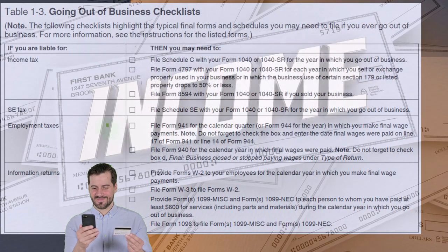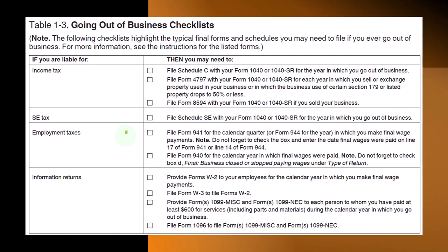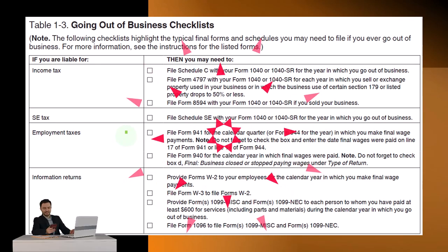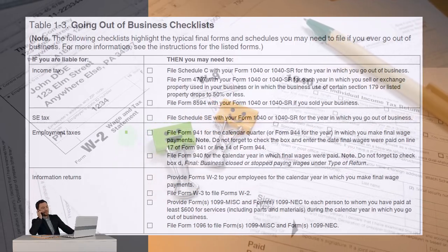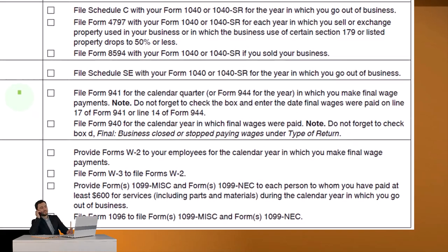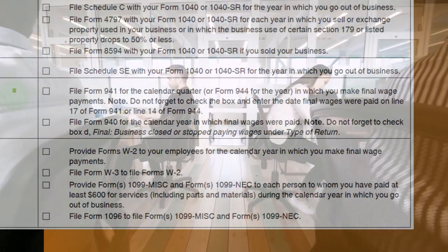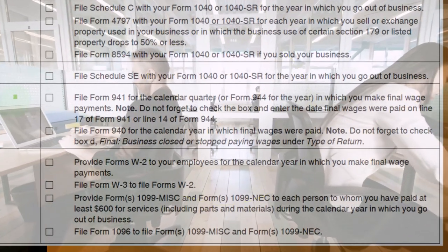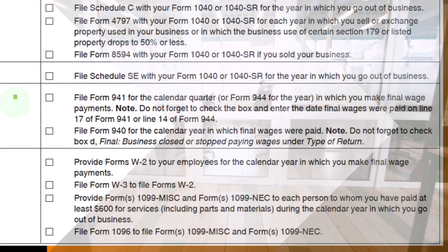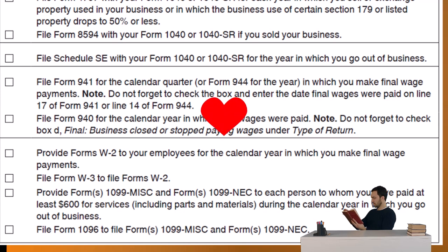Oftentimes when people go out of business, they try to cut it off in the middle of the year and drop finishing up the payroll taxes. But you still need to file the W-2s and make sure you've done the 941s and the 940. Payroll is a problem you don't want to mess up — the IRS is more strict about payroll than most other things. If you withheld money from your employees for withholding taxes — social security, Medicare, federal income tax — and you don't pay those to the government, not only did you not pay your own taxes, you basically took money from your employees and didn't pay the taxes. So do not forget to check the box and enter the date final wages were paid.